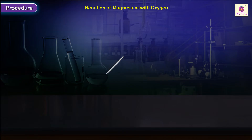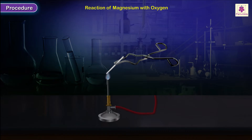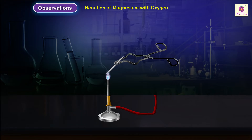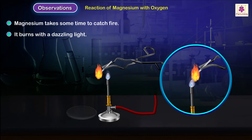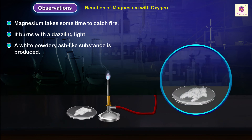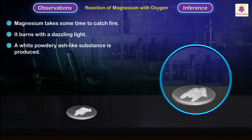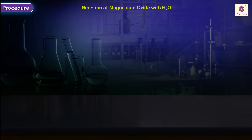Procedure: firmly grip one end of the magnesium ribbon with a pair of tongs and hold its free end continuously in the flame of the gas burner. Observation: magnesium takes some time to catch fire; it burns with a dazzling light and a white powdery ash-like substance is produced. Inference: magnesium can burn in air to produce magnesium oxide.